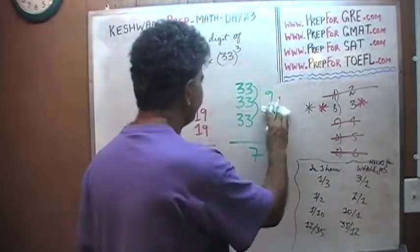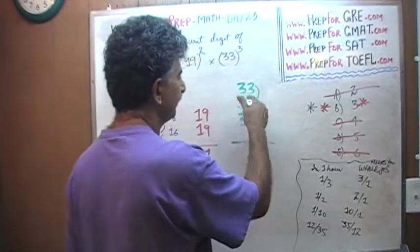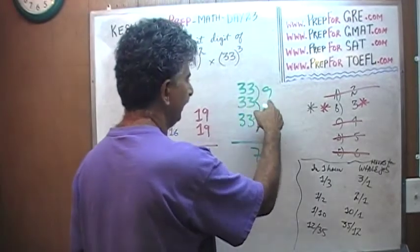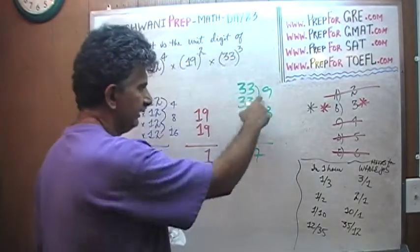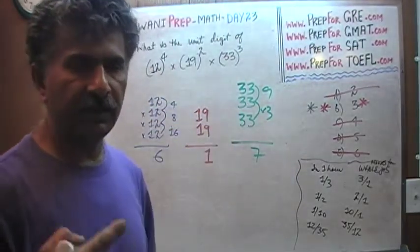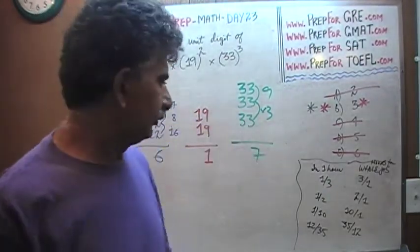One more time, I'm going to explain it. 3 times 3 times 3 is 9. 9 times 3 is 27. Which means the product of these three numbers, 33 times 33 times 33, whatever it is, should end in a 7.